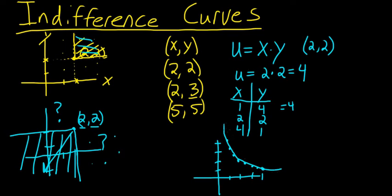This line that connects all of the points that have a utility equal to 4 is called an indifference curve. Because we are indifferent between every point on the line, meaning that we're indifferent between the bundles of goods that they contain.